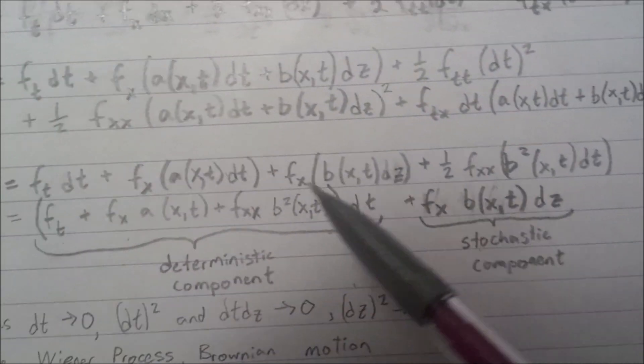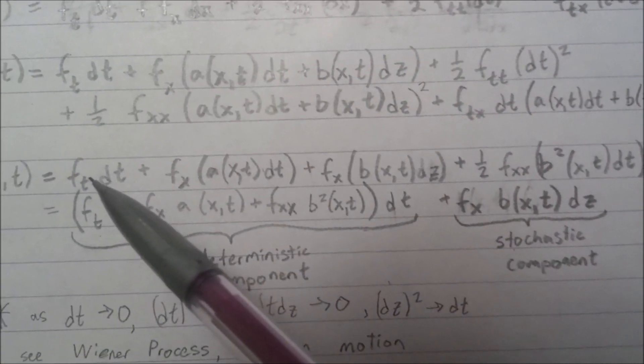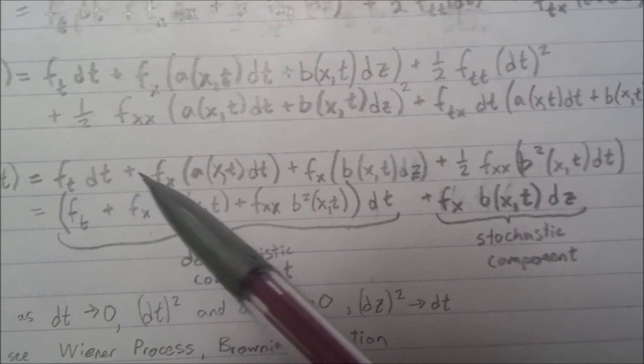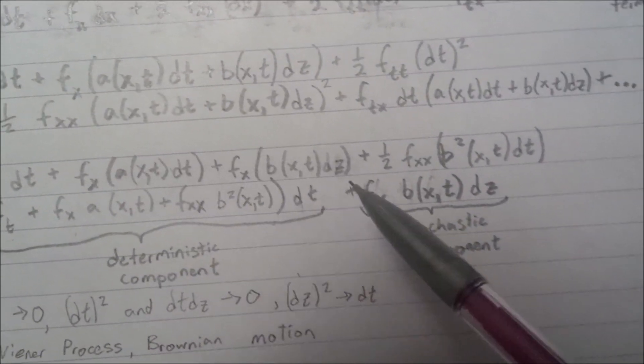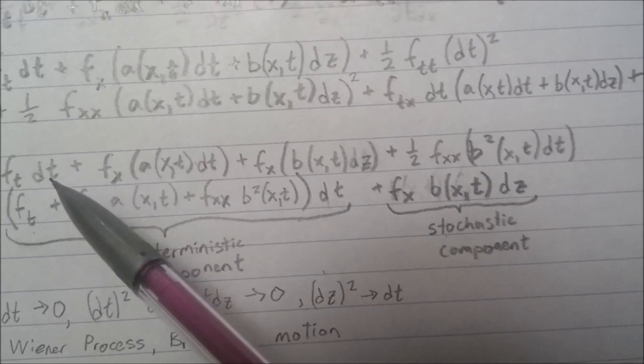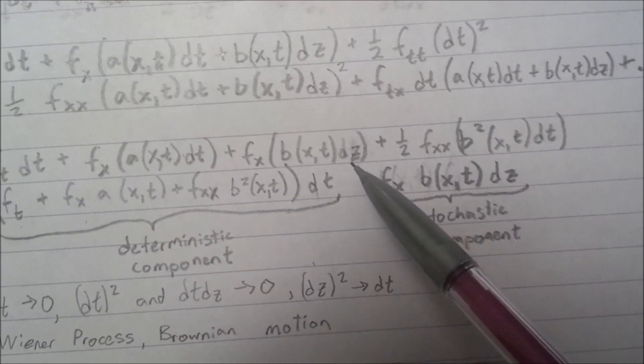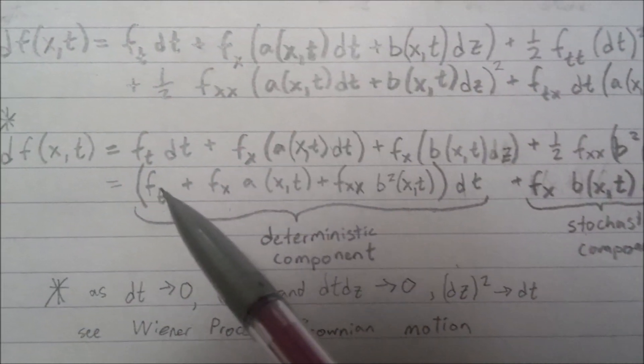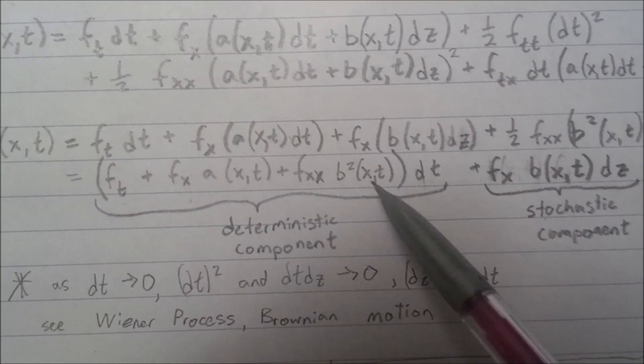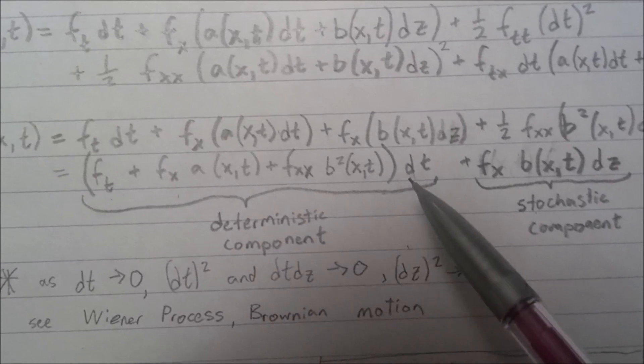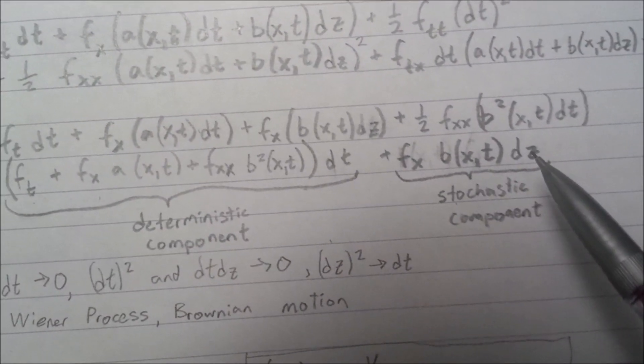I'm not going to go through all the substitutions, but you get partial of f with respect to t dt. And you can see it's a lot simpler now. And you can see there are a bunch of things with respect to t, and then one thing with respect to z. So we're going to change it in the form of all of this with respect to t, plus this with respect to z.